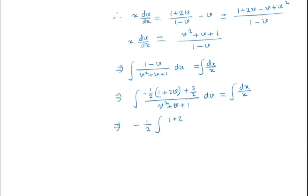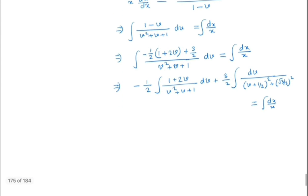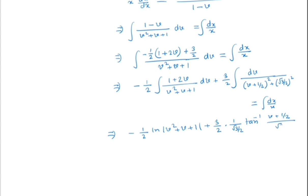The left-hand side becomes: -½ · ln(v² + v + 1) plus (3/2) times the integral of 1/[(v + ½)² + (√3/2)²] dv. This evaluates to -½ · ln(v² + v + 1) + (3/2) · (1/(√3/2)) · arctan[(v + ½) / (√3/2)] = ln(x) + C.